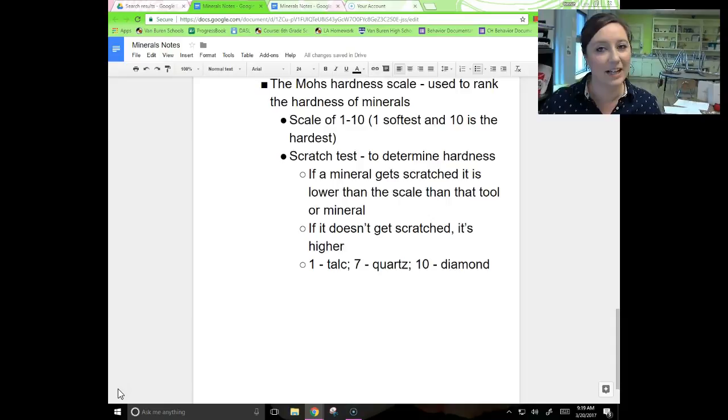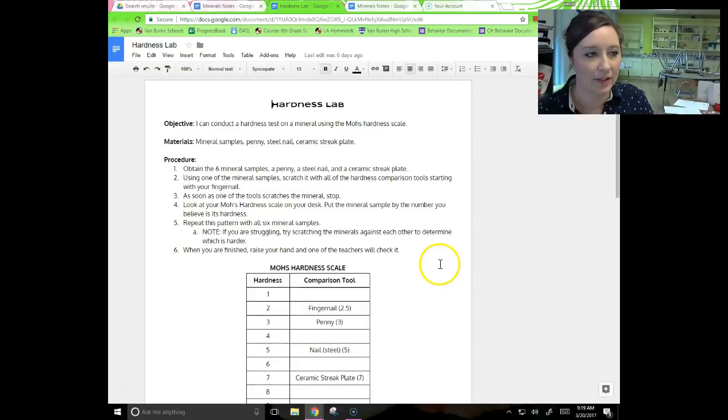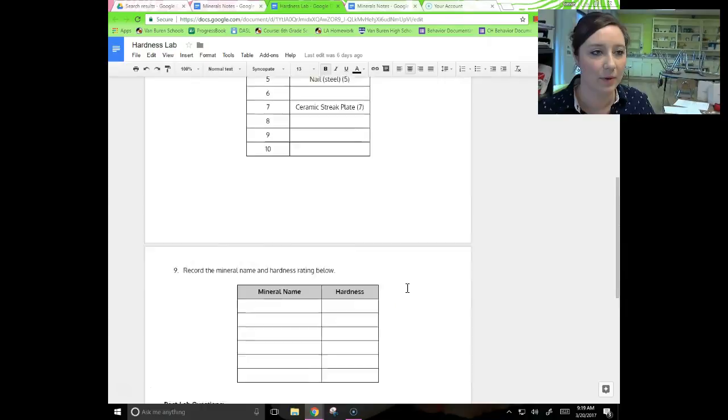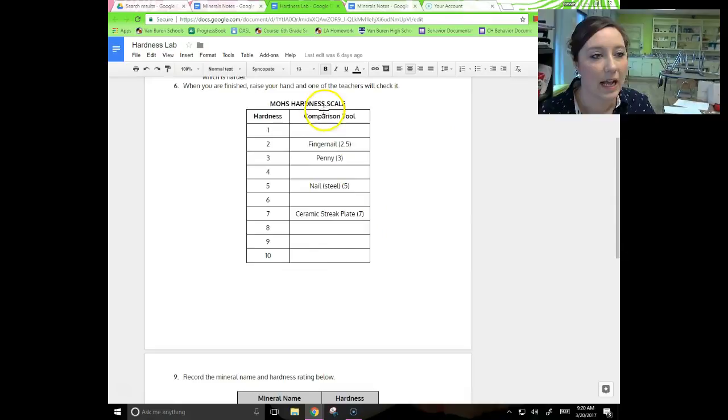If you look at your hardness lab, you'll see you'll need your mineral samples, and the penny, steel nail, ceramic streak plate are all in there. You're going to only be working with six mineral samples, not all seven. The procedure leads you through it step-by-step so you aren't completely on your own. I've put the comparison tools and their hardnesses for you. You're not going to fill in anything in this table. You'll record the mineral name and hardness over here. If you have any questions, let me know. You guys are good to go to get started on your hardness lab.